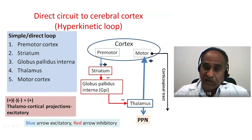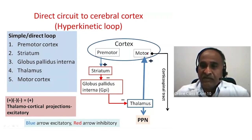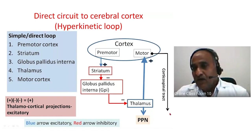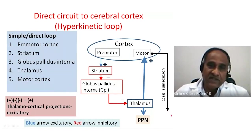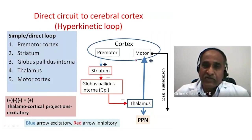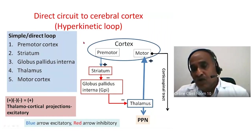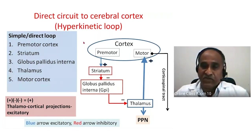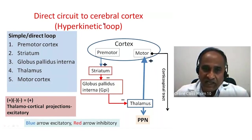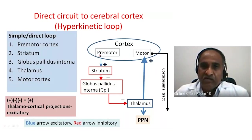From the motor cortex, the corticospinal tracts descend and cross to the opposite side in the medulla. This means whatever happens to the right side of the basal ganglia will affect the motor functioning of the left — that is, the contralateral side. This is the direct pathway.